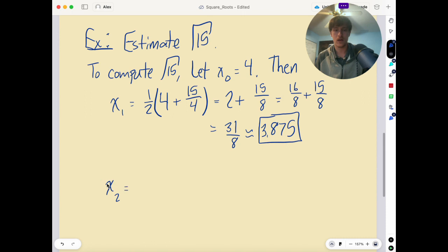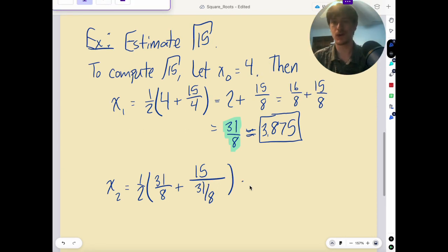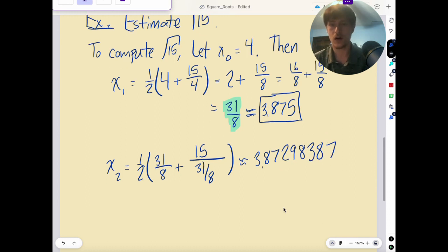Now, you would use x sub 1 in your new best guess, which we're going to call x sub 2. x sub 2 is 1 half times x sub 1, which was 31 eighths. This is actually exactly equal. You can use the decimal if you want. I'm going to use the fraction. This is going to be the average of 31 eighths and 15 divided by 31 over 8. I could show you all the messy details, but that's not really the point. This is going to be approximately equal to 3.87298387. That was just the second iteration of this.